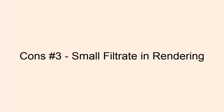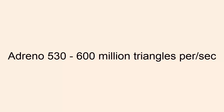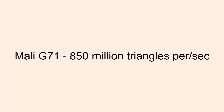Number three: Lower framerate in rendering. In Adreno, texturing is relatively weak. The Adreno 530 is able to render 600 million frames per second, while the Mali G71 does a much better job by rendering 850 million frames per second.